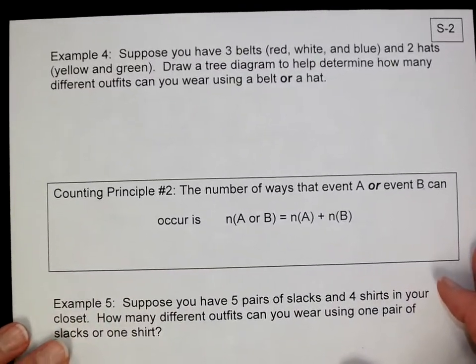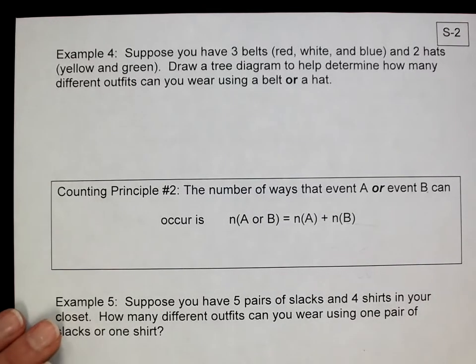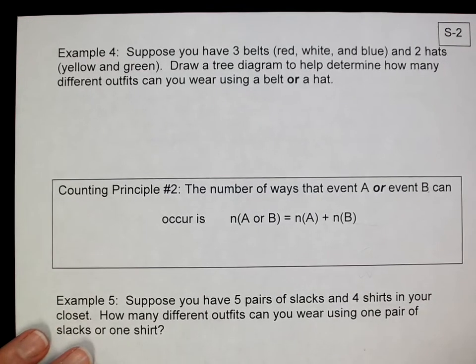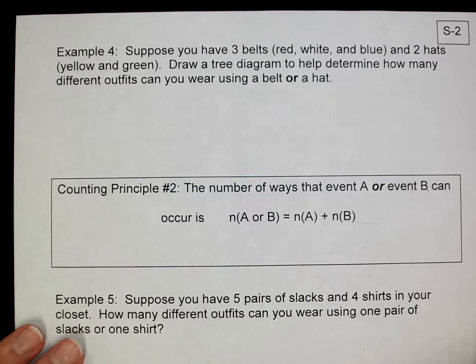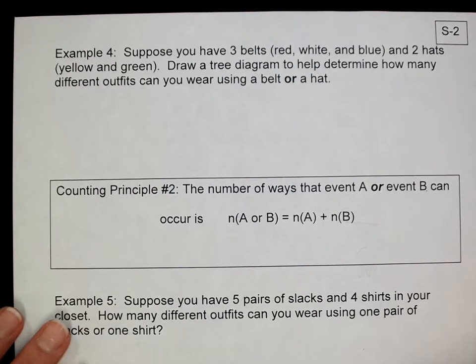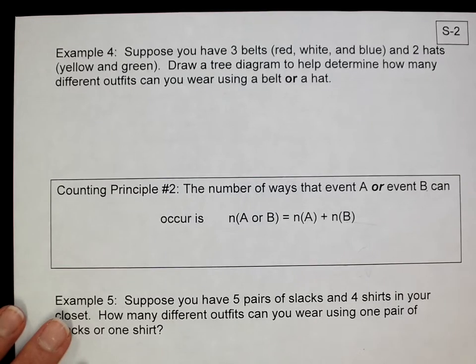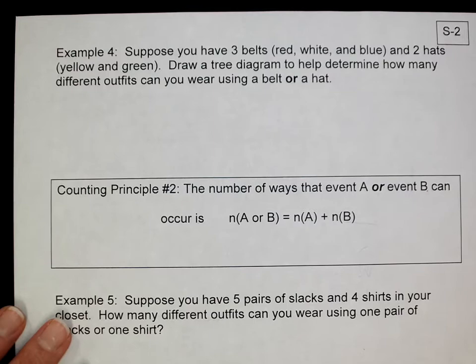Here's another one. Again, you have three belts - red, white, and blue - and two hats. Draw a tree diagram. We just did this, but now it's a belt or a hat. You could do one or the other. You could just wear one of the belts or just wear one of the hats. So I'll draw it back out.